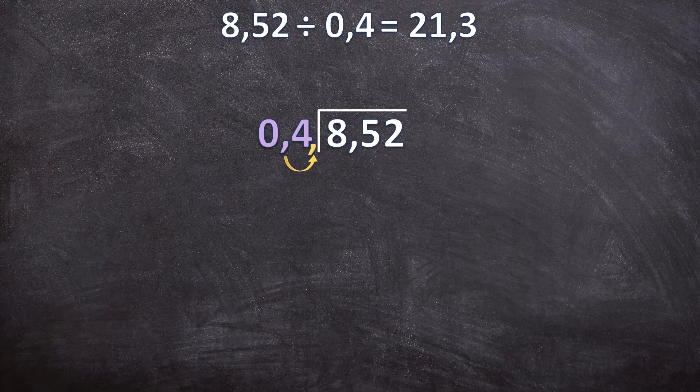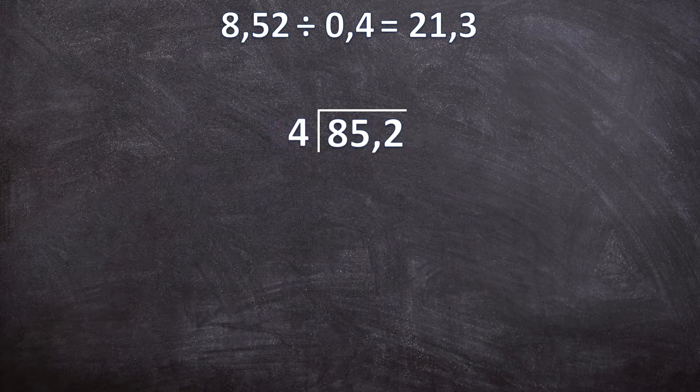But I can't just do that to the divisor — I also need to do the same with the dividend. So inside the long division bar I'm also going to multiply by 10, moving the comma one place to the right as well. Now I'll write this neatly: we have 85,2 divided by 4. We're now dividing by a whole number, which is exactly what we want.